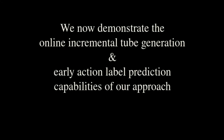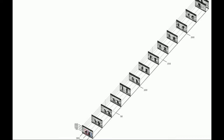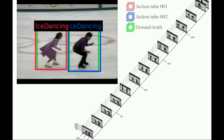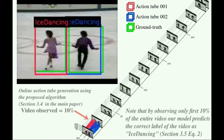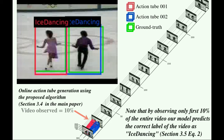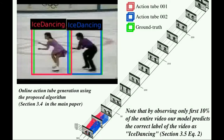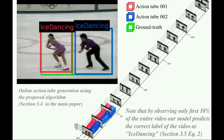We now demonstrate the online incremental tube generation and early label prediction capabilities of our approach. An ice dancing video sequence is being processed in an online fashion. Action tubes are generated incrementally using the proposed online algorithm. Please refer to section 3.4 in the main paper.